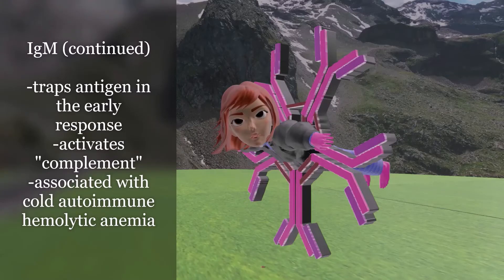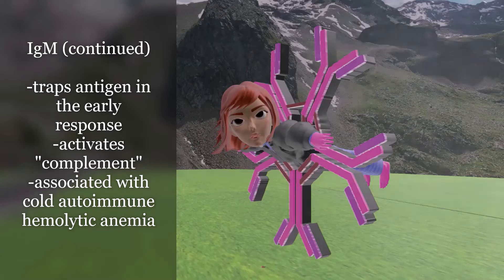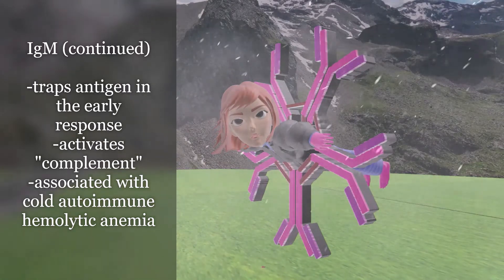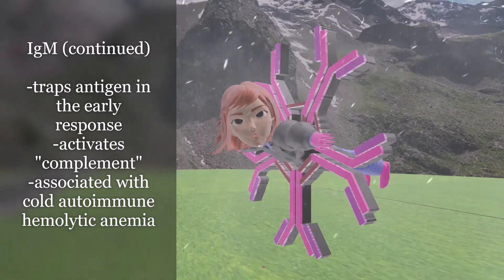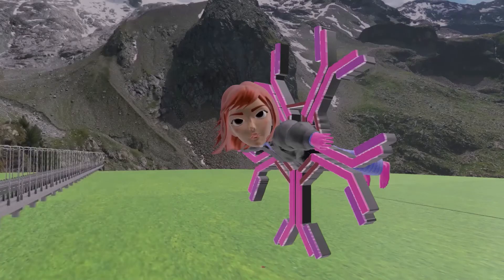Because of its design, IgM is most effective at activating complement. Perhaps this magenta IgM character likes giving people compliments — this just reminds us that IgM is effective at activating complement. One more thing: this IgM character likes to hang out in cold environments, which reminds us that IgM is associated with cold autoimmune hemolytic anemia.